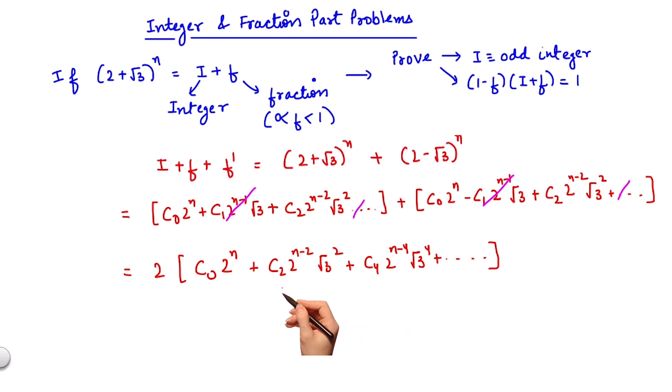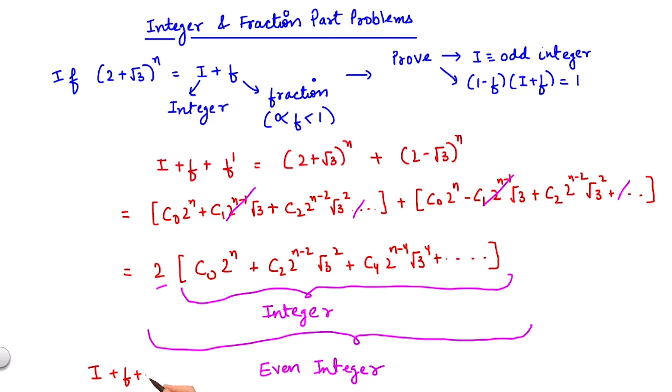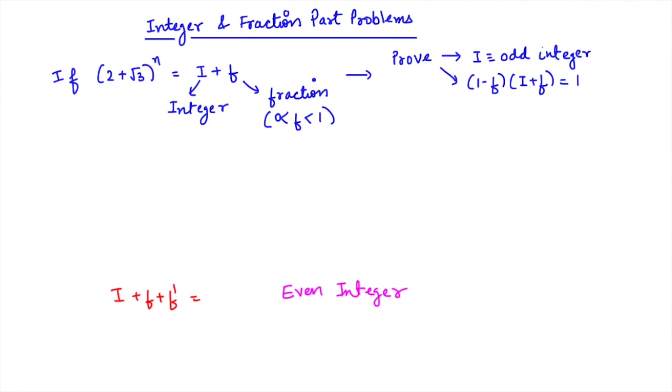Now since in this expression I only have even powers of root 3, therefore this would be an integer. And since I am multiplying 2 with an integer, this entire expression would be an even integer. Therefore i plus f plus f dash would be an even integer.